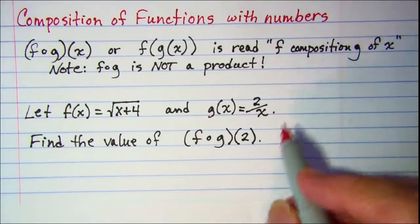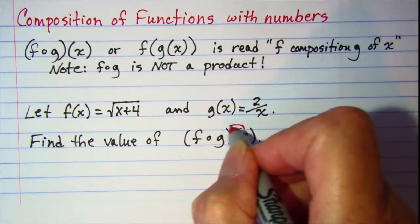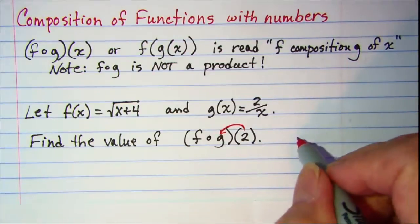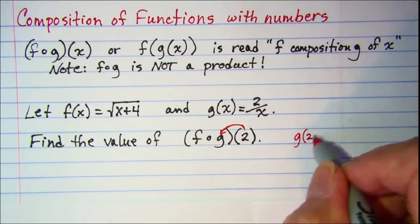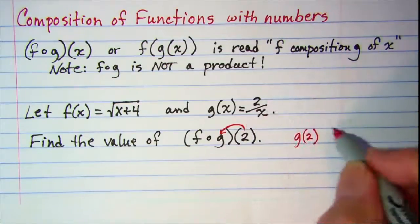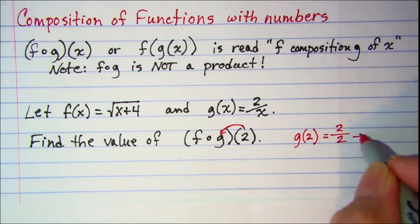Now to do a composition with numbers, we're first going to put 2 into the g function, so we want to calculate g(2), which means we're just going to sub in 2 into our g function, so we have 2/2 which is 1.